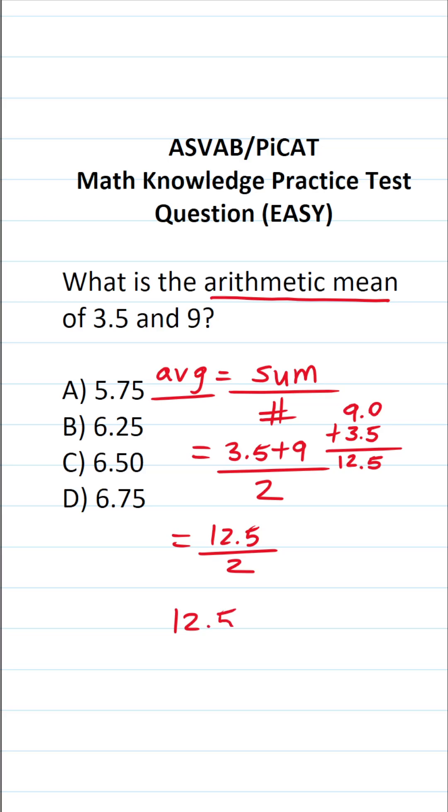We can read this as 12.5 divided by 2. How many times does 2 go into 12 without going over? It's going to be 6 times.